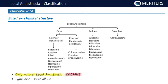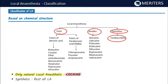The first classification of local anesthesia is based on chemical structure. There are basically three chemical types: ester-based, amide-based, and quinoline-based. The quinoline-based agent is centbucridine, and it is important to note that this is the only member of this classification.